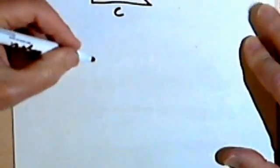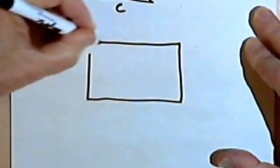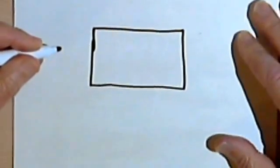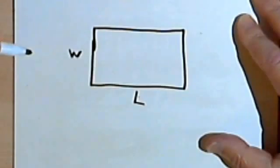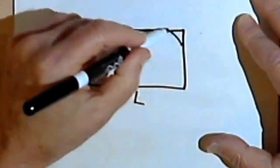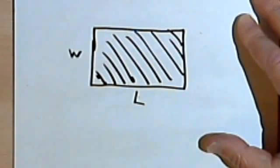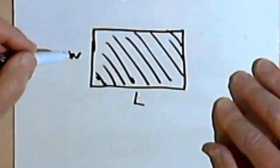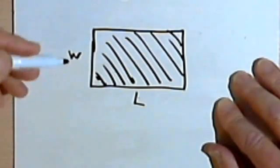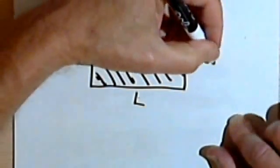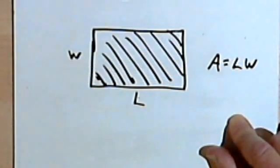Let's go into area. Starting with a rectangle — the rectangle's two dimensions are length and width. The area is the surface, everything inside the rectangle. To find that area, we multiply the length and the width together. So the area is going to be the length times the width.